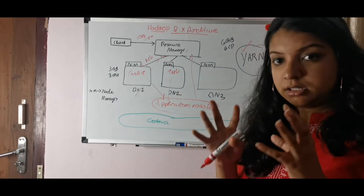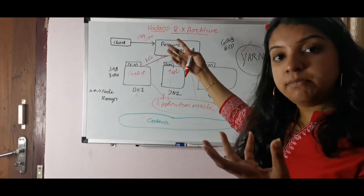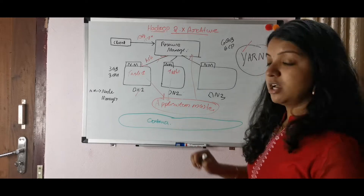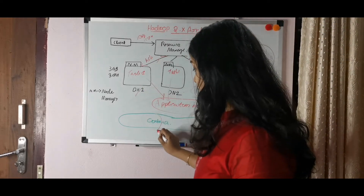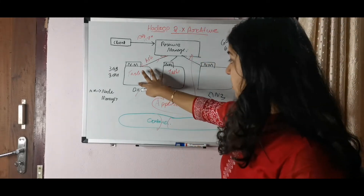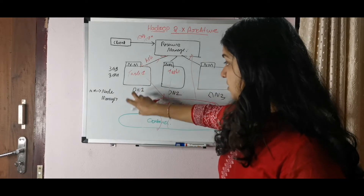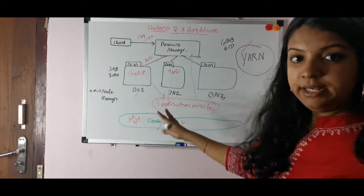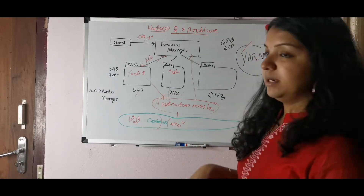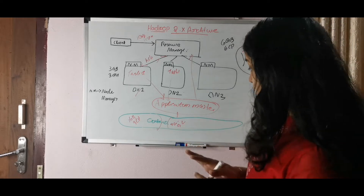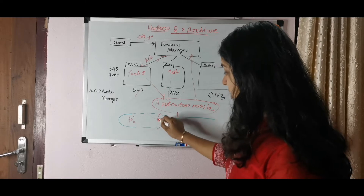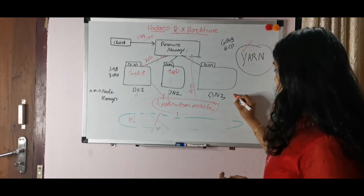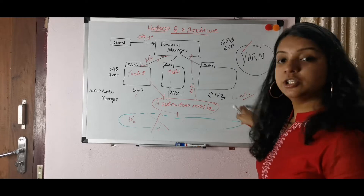The Application Master sends the status — completed or still processing — to the Resource Manager. We also need a virtual space, and that is the concept of a container. A container is a virtual space allocated for a task — for example, 3GB RAM and 3 CPUs per node. Once the task is completed, the container is destroyed and a completion message is sent to the Resource Manager.